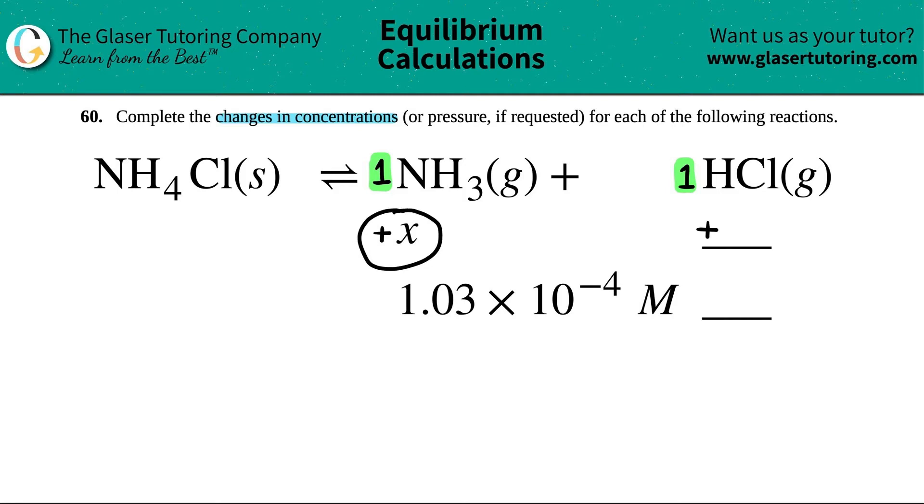So we add by the coefficient. This is the same thing as saying plus 1X. The 1 came from the coefficient of NH3, which was 1. But 1X is just the same as X. So the same thing here. This would be plus 1X, but 1X is the same as just X.